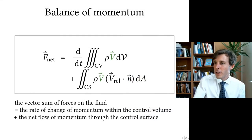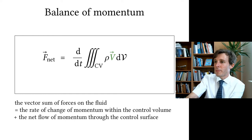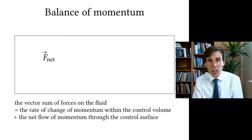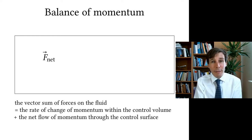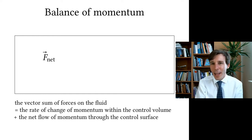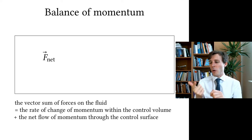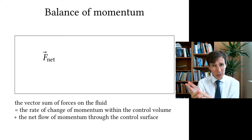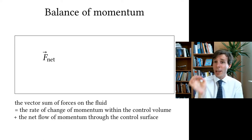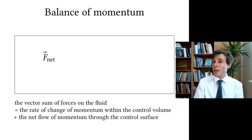We have three different terms. On the left is F_net — this is what we want to calculate. This is the net force: the sum of all forces due to a propeller, a compressor, shear inside the flow, pressure inside the flow, or gravity. The net vector sum of all of those as one force. This is equated to two things.